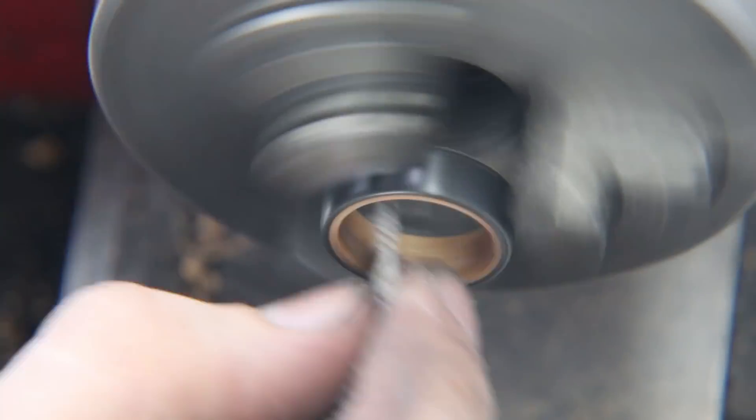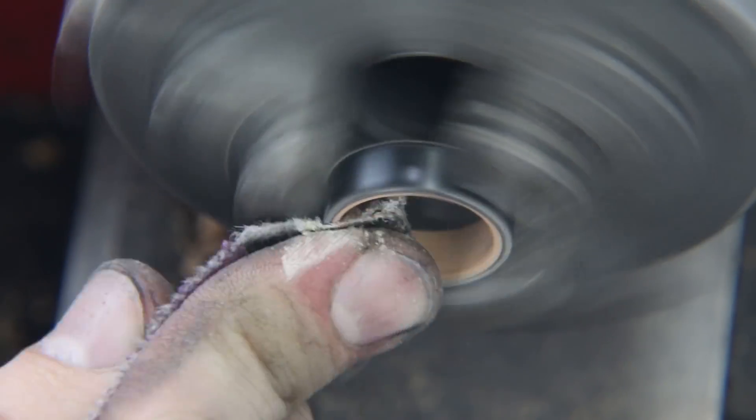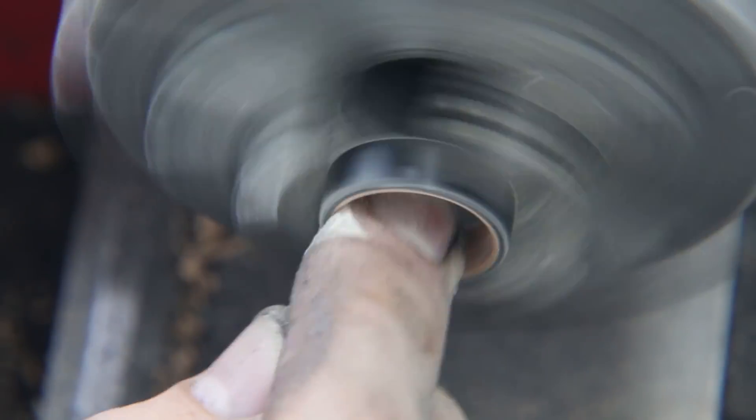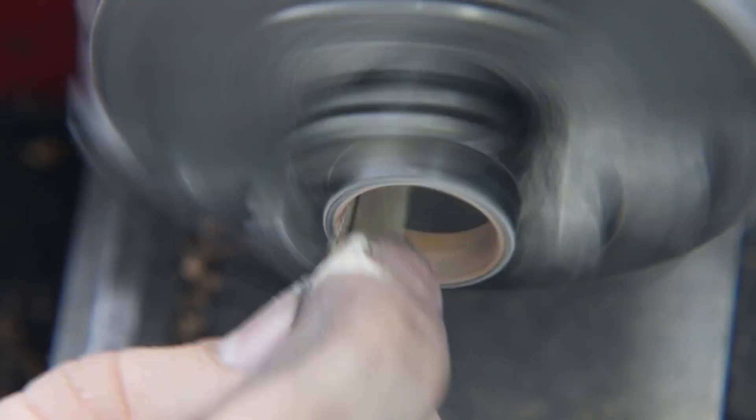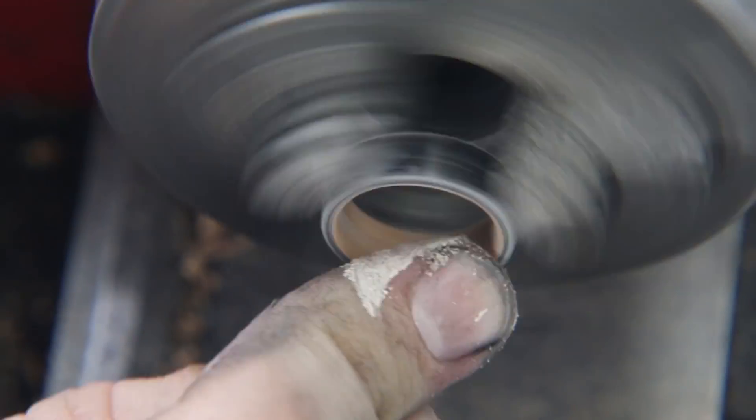Okay, so we've got the outside finished but we still need to take care of the inside. I'm going to apply some electric tape to the outside of the ring and that'll protect the nice finish we've got on the carbon fiber from the lathe jaws that I'll be using.